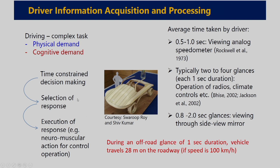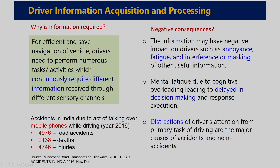While drivers are doing this type of complex decision-making task — selecting a particular response and executing that response — they receive, process, and execute various information. Different types of information are very important for a driver's safe and effective navigation. On one hand, information is required for driving; on the other hand, if information overloading is there, different types of driver errors happen. The information may have a negative impact on drivers such as annoyance, fatigue, interference, or masking of other useful information. There is also mental fatigue due to cognitive overloading, which leads to delayed decision making and response execution.